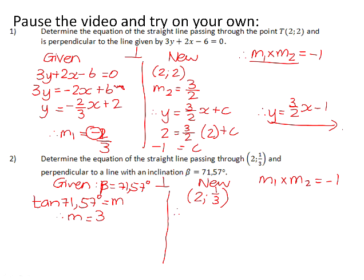Therefore, the new graph's gradient, so m1 will be 3. The new graph's gradient needs to have the opposite sign and it needs to be the reciprocal fraction. The reciprocal of 3/1 is 1/3.